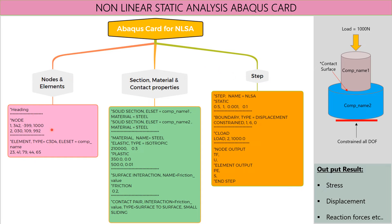There are mainly three portions in the input file. Nodes and elements are part one. In part two, there are three sub-parts: section properties, material properties, and contact properties. In section properties, a solid section is defined for component one and component two, both having steel as the material type.